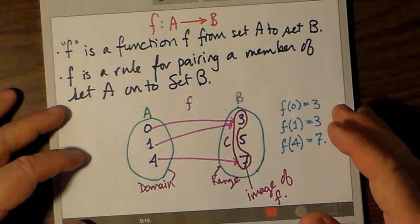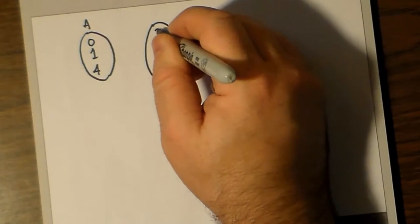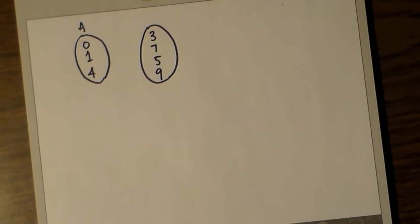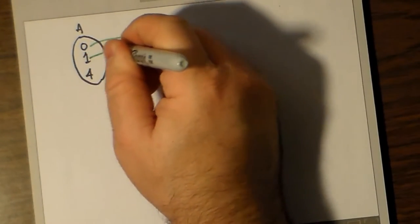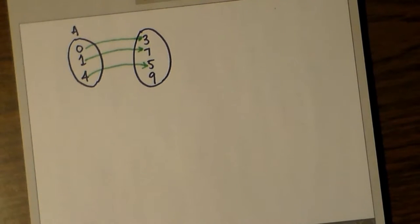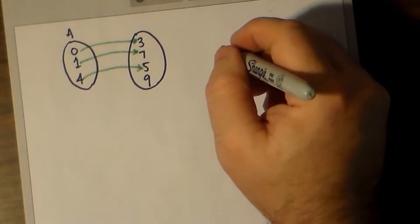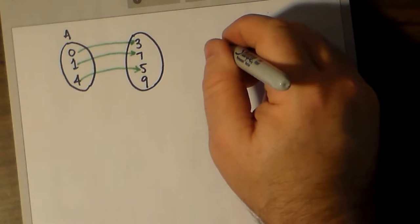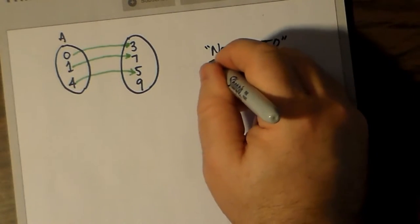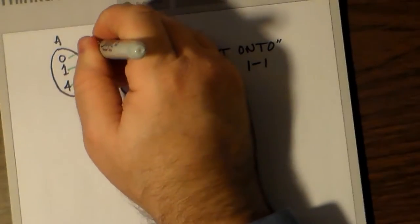In order to have an onto function, all the numbers in both the domain and the range must be used up. Let's define set A as containing the numbers 0, 1, and 4, and set B as containing the numbers 3, 7, 5, and 9. Let's draw arrows associating 0, 1, 4 with members of set B, as if we're trying to define a function f which applies this rule from set A to set B. Notice that the function is one-to-one but it's not onto, because not all members of set B are used up.